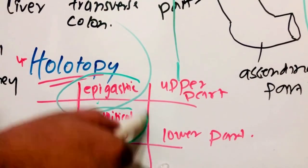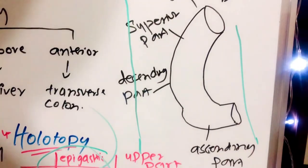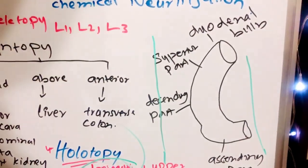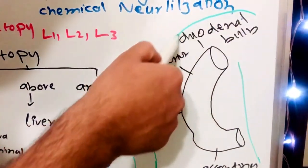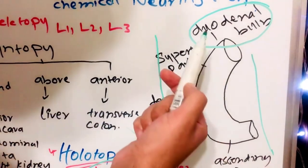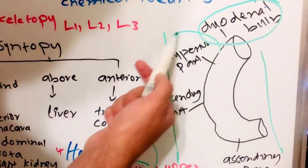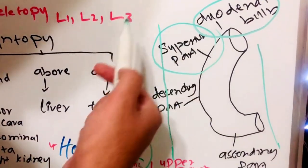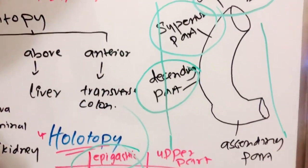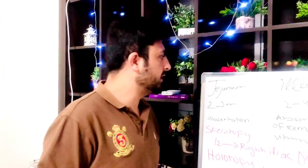As we can see in the diagram, the duodenum has different parts. First we have the bulb, which is the superior part. From the point where it descends, it is called the descending part, and from the point where it ascends, it is called the ascending part.